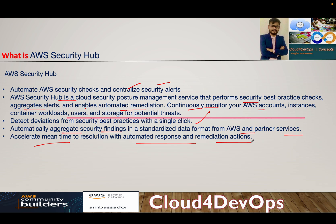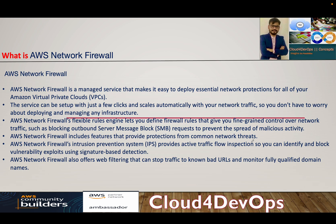Security Hub automatically aggregates security findings in a standard data format from AWS and partner services, and accelerates mean time to resolution with automated response and remediation actions. This gives you a consolidated console where you can see all the findings at one place, and you can automate a lot of different responses to secure your AWS account from both a security and account perspective. I will share the link of the AWS Security Hub practical demo I had done in the past, so please go through that.